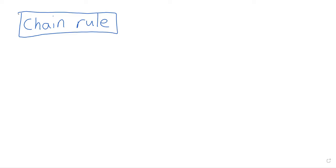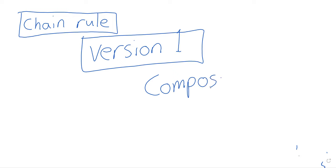We'll use it pretty much daily after we finish this week. The chain rule is traditionally presented to students in two different ways. So, what we're going to present now is what we call version one of the chain rule. The chain rule is a tool for differentiating compositions.